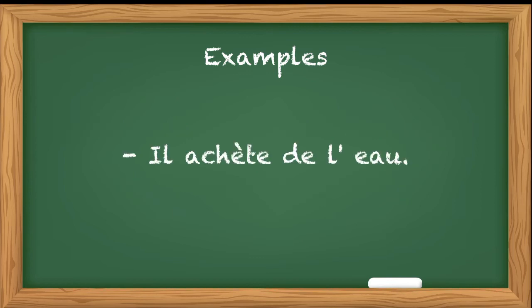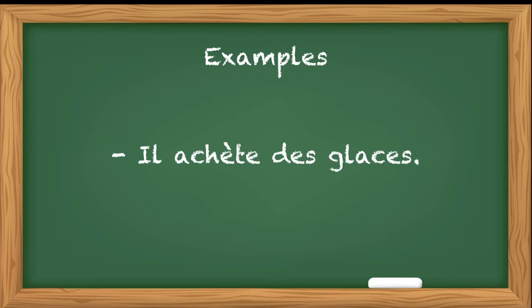Generally with food items or beverages, we use les articles partitifs. Il achète de l'eau - he buys some water. Water, eau, starts with a vowel, so we have used de l'apostrophe. Il achète des glaces means ice creams, so he buys some ice creams. Because now the noun has become plural, we have written des glaces.